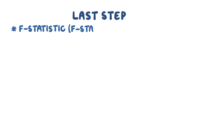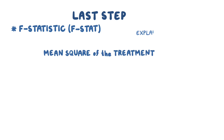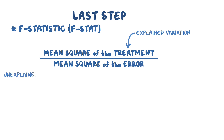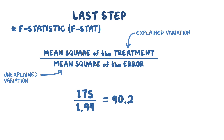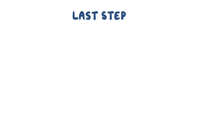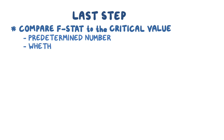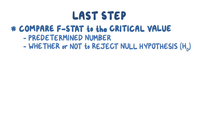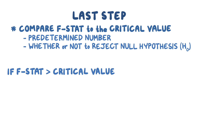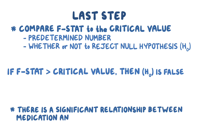The sixth and final step is to calculate the F-statistic, which is the mean square of the treatment (the explained variation) divided by the mean square of the error (the unexplained variation). In our example, the MST is 175 and the MSE is 1.94, so 175 divided by 1.94 equals 90.2. To figure out if this is a significant F-stat, we compare it to the critical value — a predetermined number used to determine whether or not to reject the null hypothesis. If the F-stat is greater than the critical value, then the null hypothesis is false, and we can conclude there is a significant relationship between medication and blood pressure.